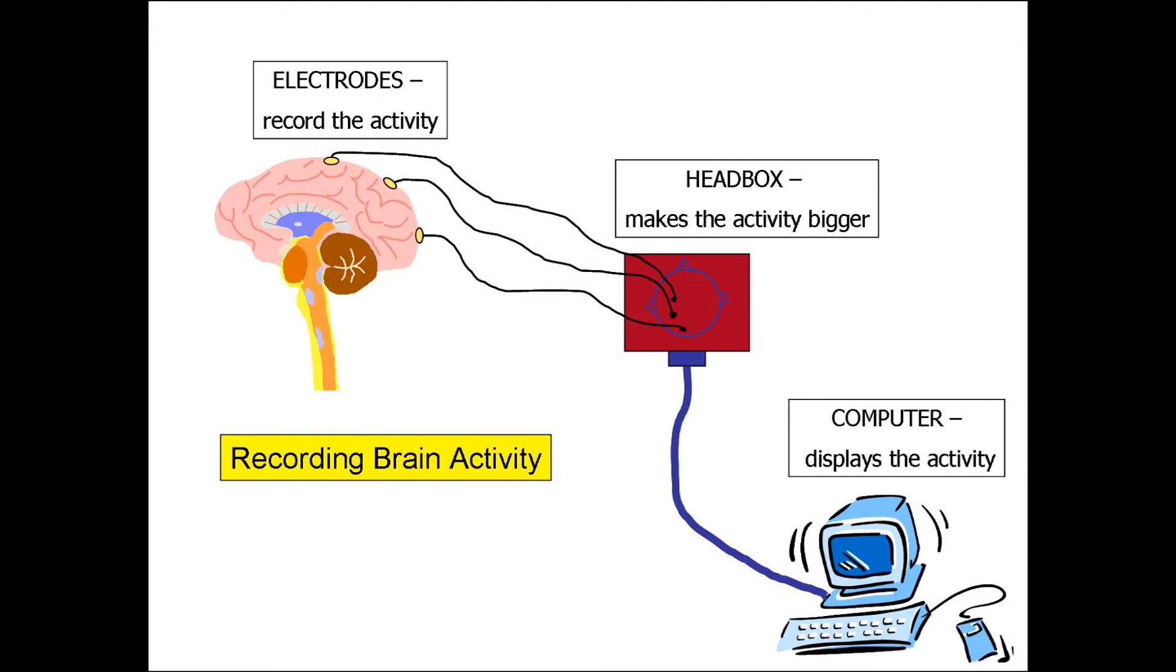The EEG activity is a small signal measured in microvolts, with the main frequencies of interest at approximately 30 hertz.